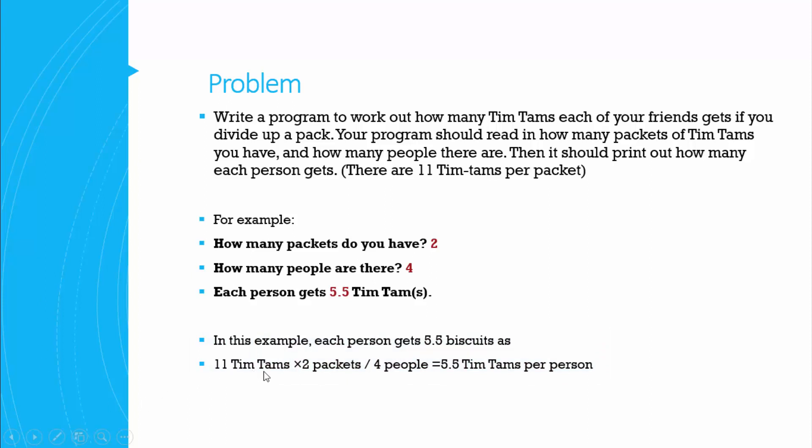So in this example, we will need to times 11 Tim Tams by 2 packets because we've got that information there. We will also then need to divide it by the amount of people that are there, so 4 people, and then in turn each person will receive 5.5 Tim Tams.